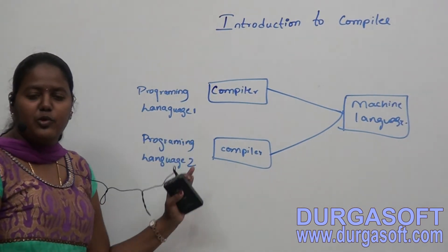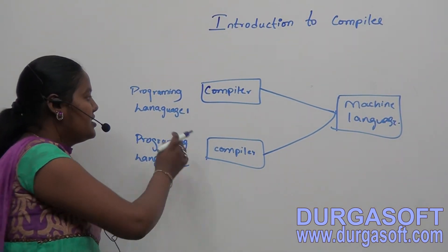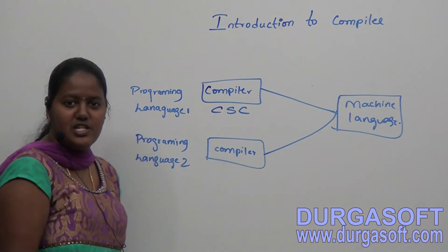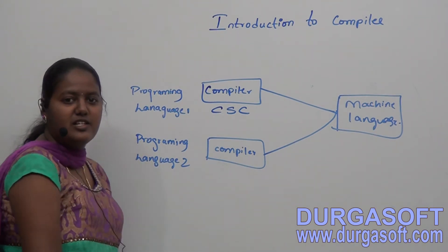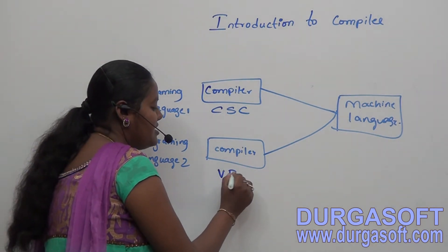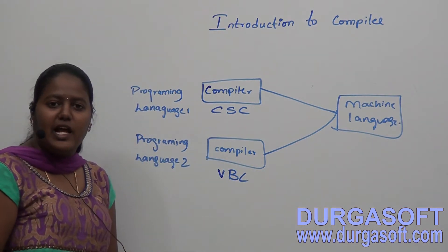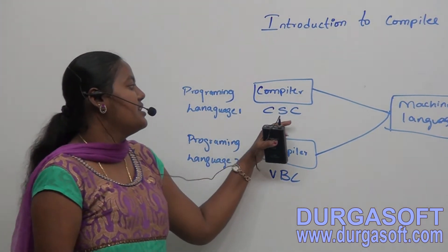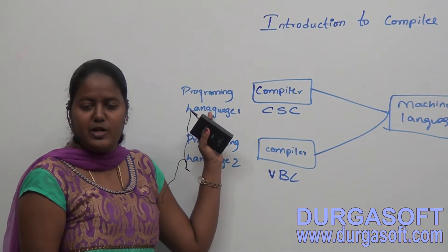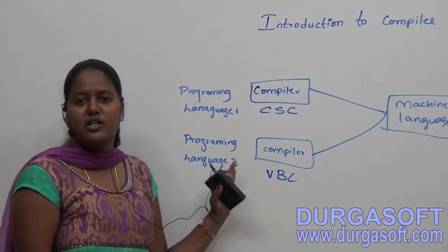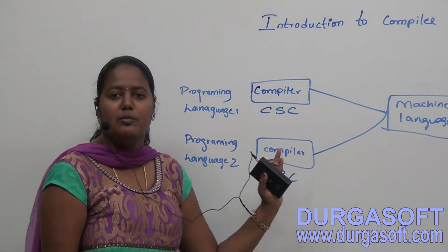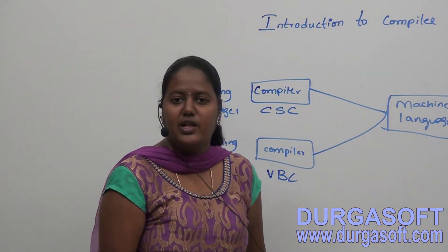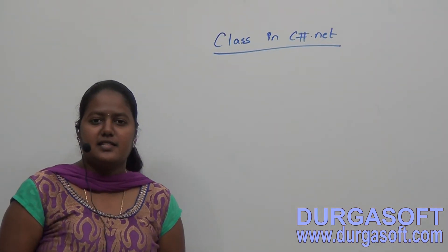Each and every programming language will have its own compiler. CSC is the compiler of C#.NET and the second programming language VB.NET uses VBC as the compiler. C# compiler converts the C# language into machine language and VBC converts the VB language into machine language. So totally, a compiler is nothing but a translator between the high level language and the low level language.